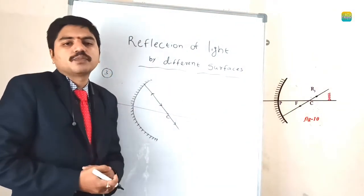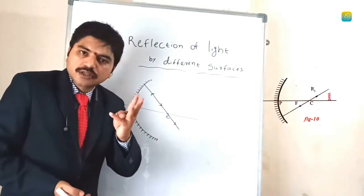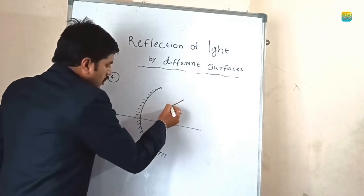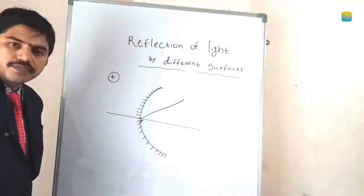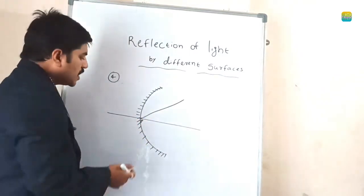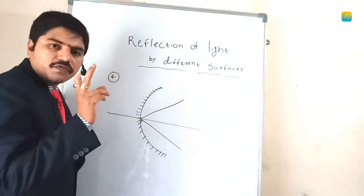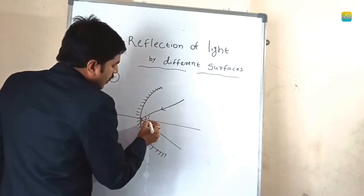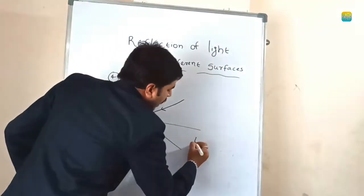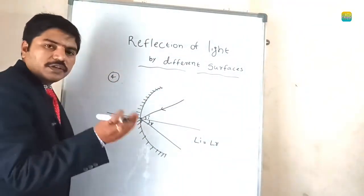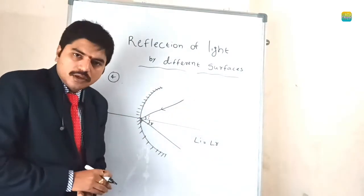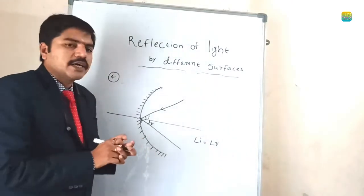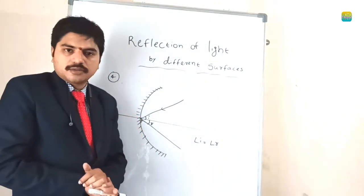So the incident ray retraces the same path — that is the third condition. The fourth condition: if any ray falls directly on the pole, then the same angle of incidence is ready to reflect. Angle of incidence equals angle of reflection — angle i equals angle r. Whatever angle of incidence appears, the same angle of reflection should appear. These are the four conditions to satisfy for proper ray diagrams.